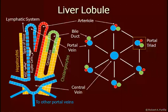The space of Disse leads to the lymphatic system, where toxic substances and microorganisms can be cleared. Also located in here are hepatic stellate cells. These cells store fat, vitamin A, and other fat-soluble vitamins. These cells will be converted into fibroblasts if the liver is damaged. These fibroblasts then will lay down collagen fibers, eventually leading to cirrhosis.